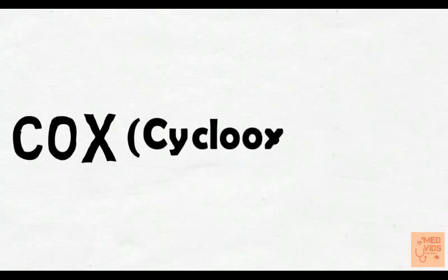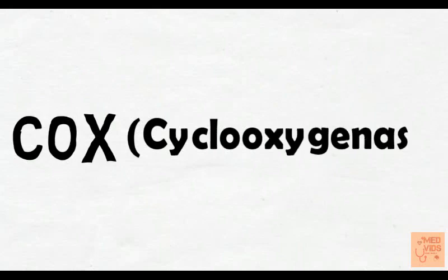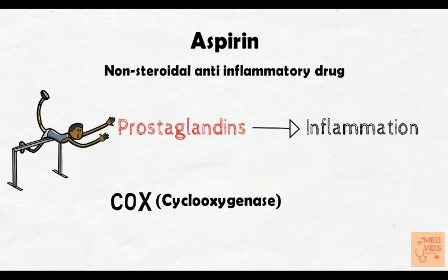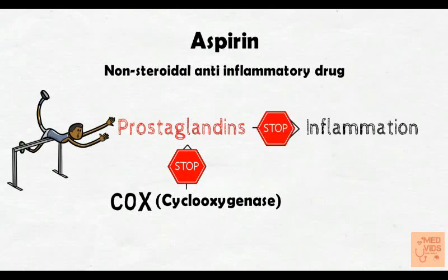Cyclooxygenase is the enzyme responsible for the production of prostaglandins from arachidonic acid. Aspirin effectively inhibits the cyclooxygenase enzyme. By doing so, it decreases prostaglandin synthesis and thereby decreases inflammation.